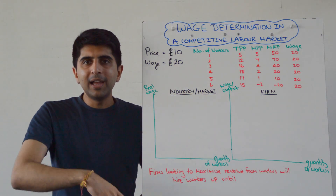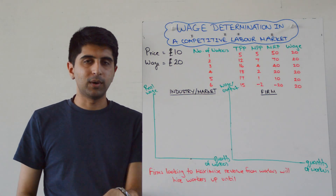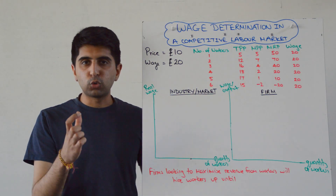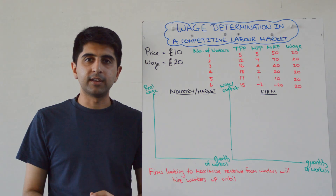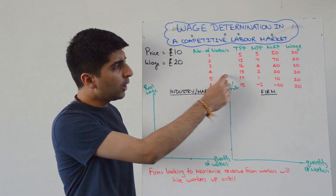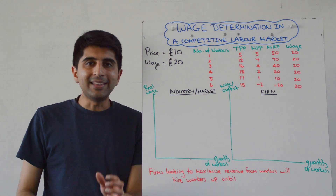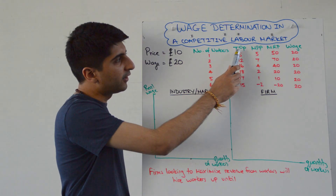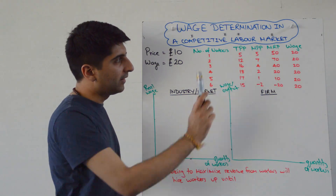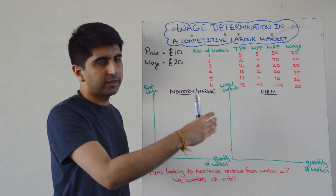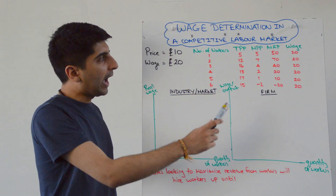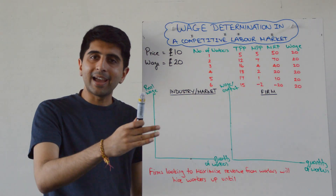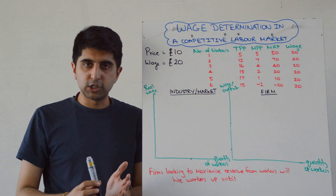Let's apply this to a given firm — a high-end burger joint where the price of a burger is £10 and the wage set by the market is £20 per hour, regardless of the number of workers the firm employs. We assume this firm is in the short run, meaning it's experiencing the law of diminishing marginal returns. That explains what's happening in the total physical product column and the marginal physical product column — as the number of workers hired increases, the figures initially rise and then start to fall.